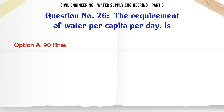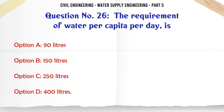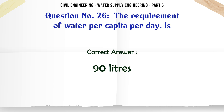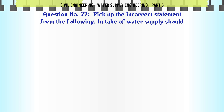The requirement of water per capita per day is: A. 90 liters, B. 150 liters, C. 250 liters, D. 400 liters. The correct answer is 90 liters.